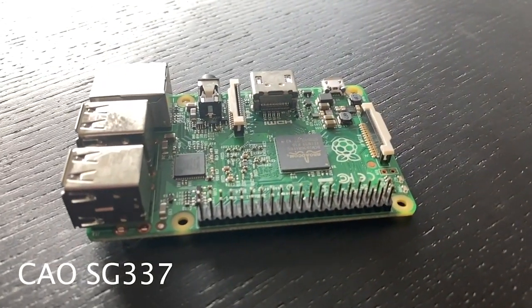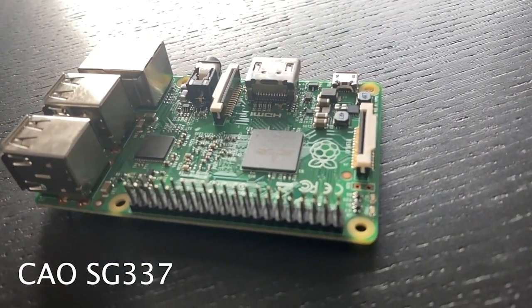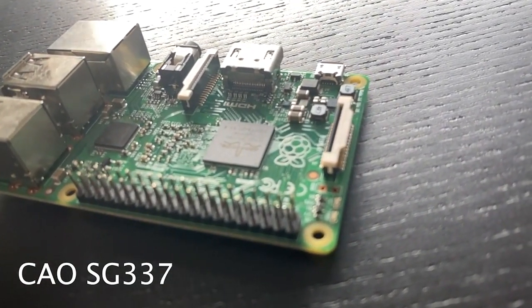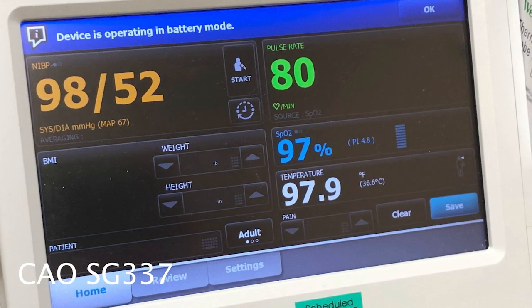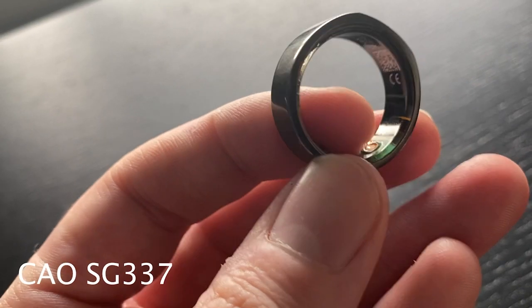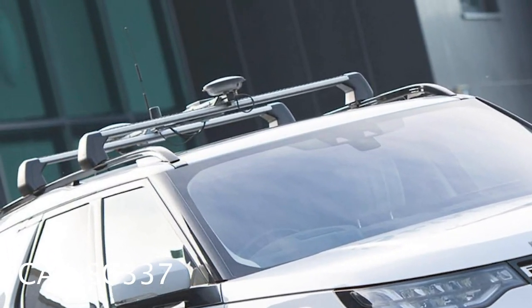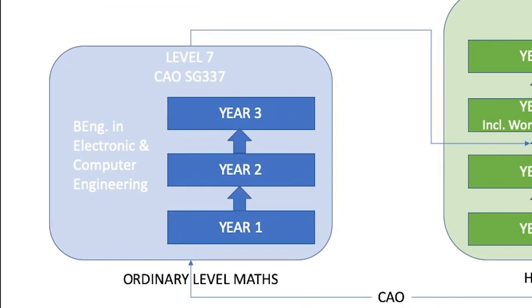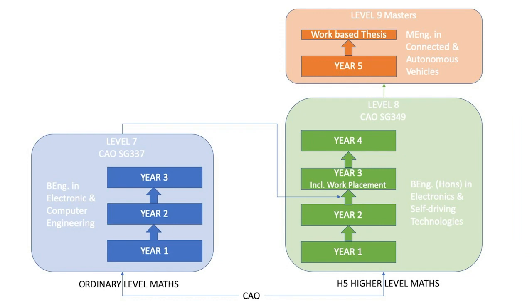If you are interested in technology or engineering but are not doing higher level maths, why not consider our level seven in electronic and computer engineering? This is a three year program that looks at the design and development of embedded electronic systems. These are the medical devices that keep us healthy, the consumer devices that keep us entertained, or the control systems that keep us safe on the road. You can then progress onto the level eight in electronics and self-driving technologies and from there to the masters. Check out the link below for more information.